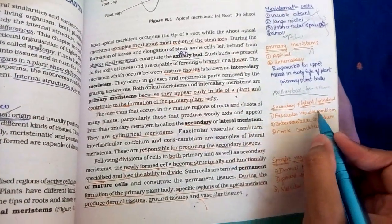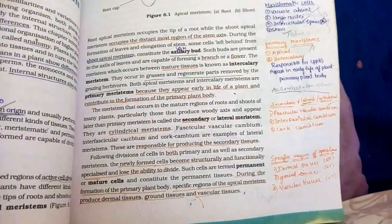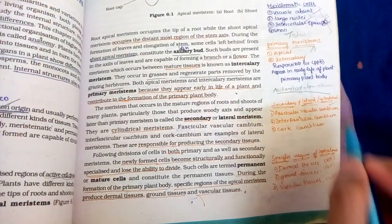Secondary meristem and lateral meristem. Also, this is called cylindrical meristem. Secondary meristem is used in lateral sites. This is why they have called lateral meristem and cylindrical meristem.